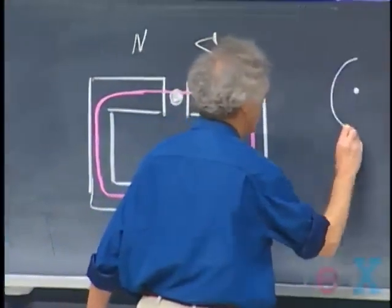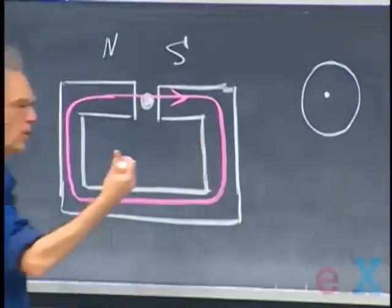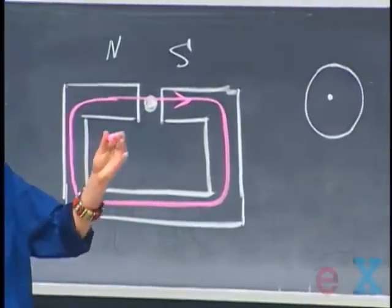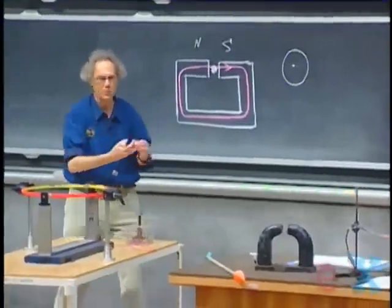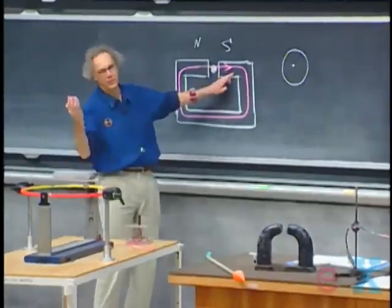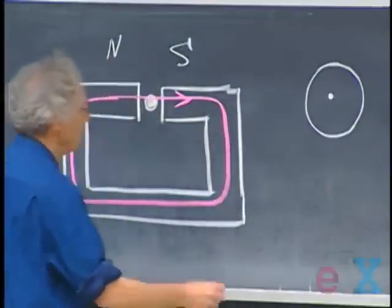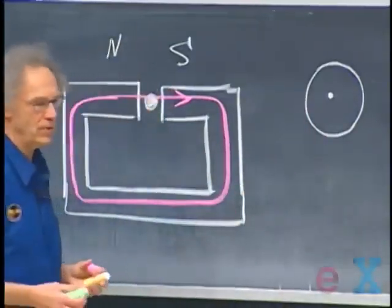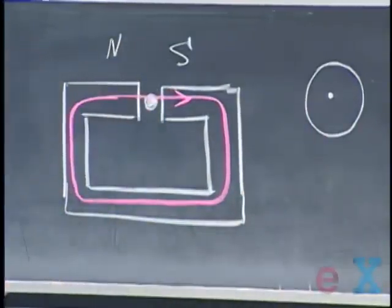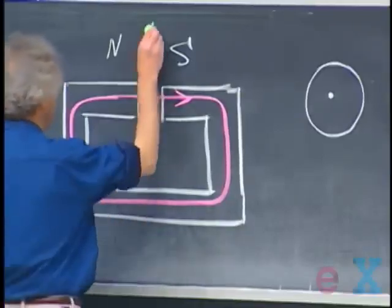When I turn the current on, if the current is coming out of the blackboard, and I have fifty percent chance because I really don't remember whether this is north or south. But let's assume that this is the configuration, that the current is coming out of the blackboard. Then you will see this wire experience a force up.